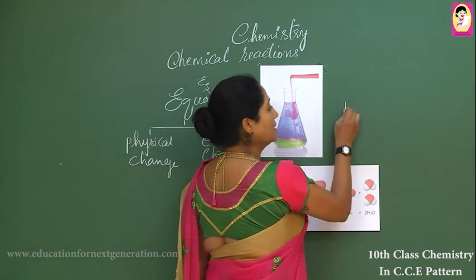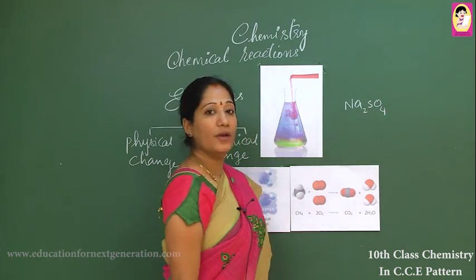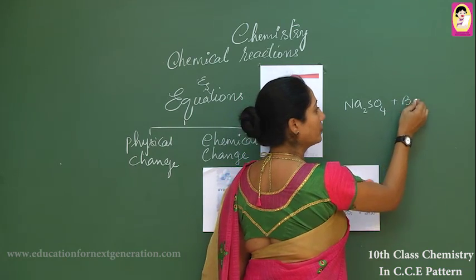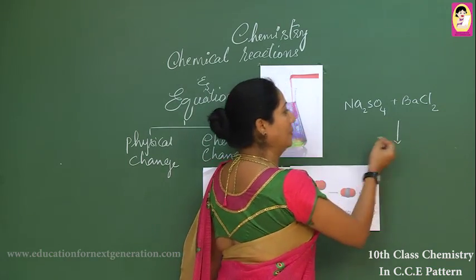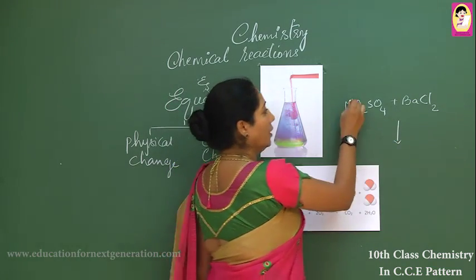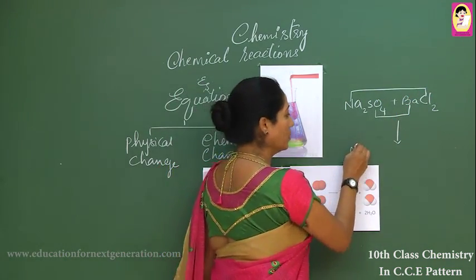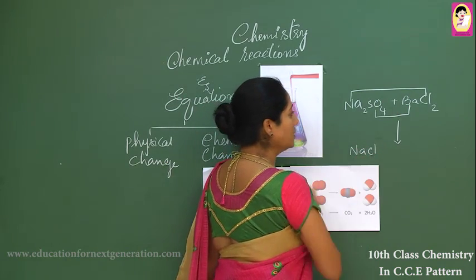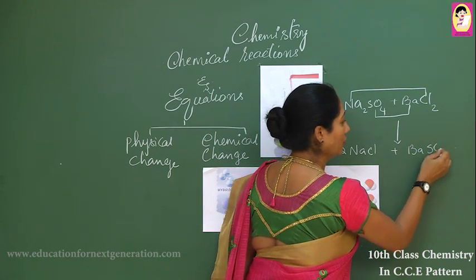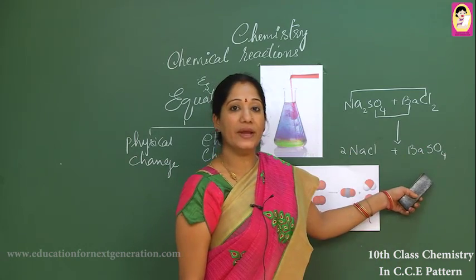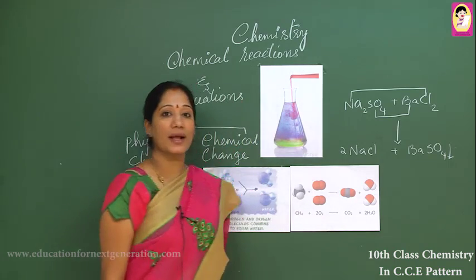Let us take an example: sodium sulfate when it reacts with barium chloride, a reaction takes place between the two and a new component is obtained — giving rise to sodium chloride plus barium sulfate. Because barium sulfate is insoluble, it gives rise to a substance called a precipitate.